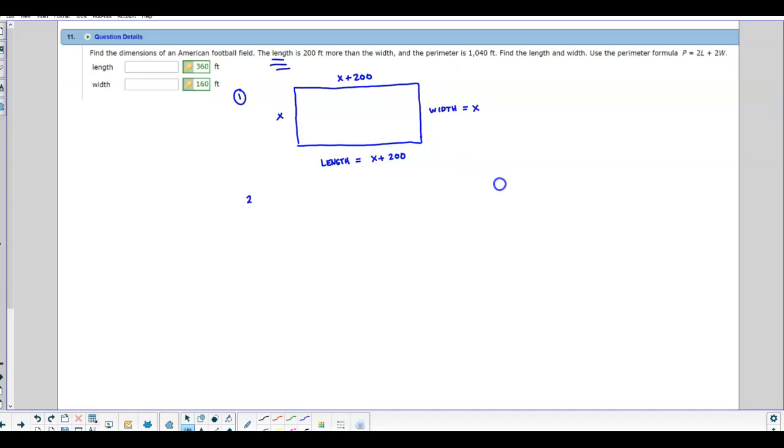And then we also know that the perimeter is equal to 1040 feet. So let's use our formula. The formula states that if we have two times the length plus two times the width, it's going to equal the perimeter or vice versa.